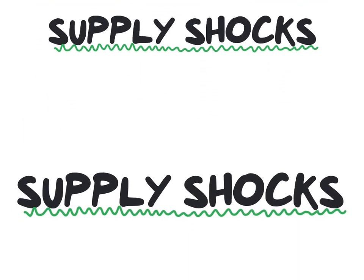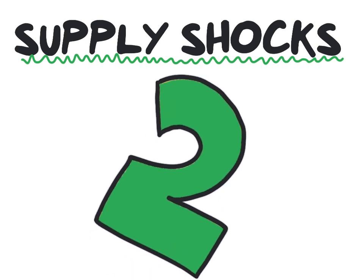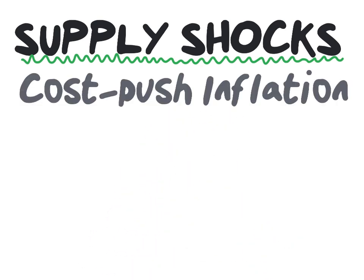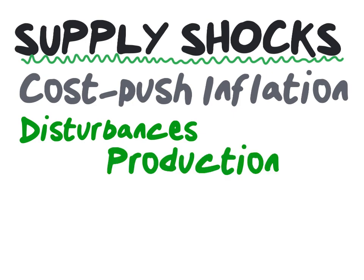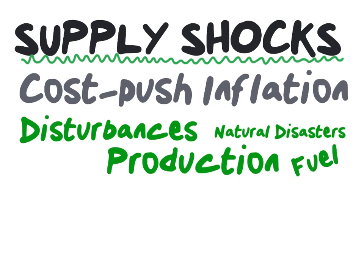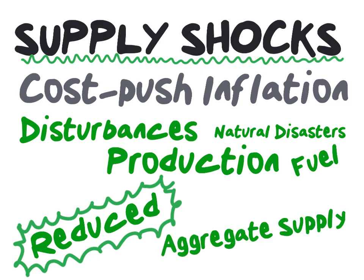Now it's time to look at the second cause of inflation, namely supply shocks. Supply shocks give rise to cost-push inflation. Cost-push inflation is the situation in which disturbances in production, such as natural disasters or fuel prices, in turn reduce the aggregate supply of the economy.